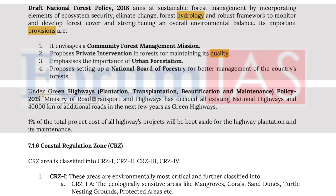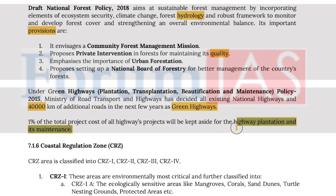Under the Green Highway Projects plantation, transplantation, beautification and maintenance policy of 2015, the Ministry of Road Transport and Highways has decided to develop all existing national highways and 40,000 kilometers of additional roads in the next few years as green highways. One percent of the total cost of all highway projects will be kept aside for highway plantation and its maintenance.